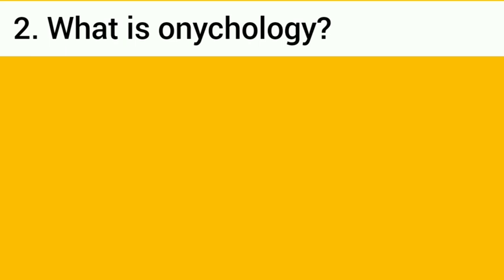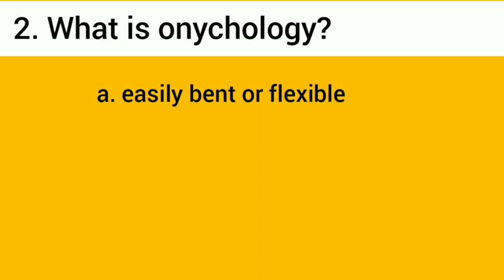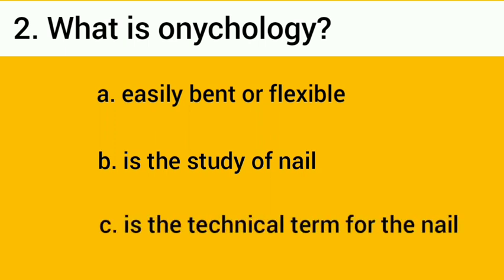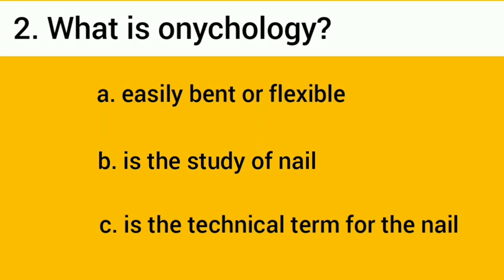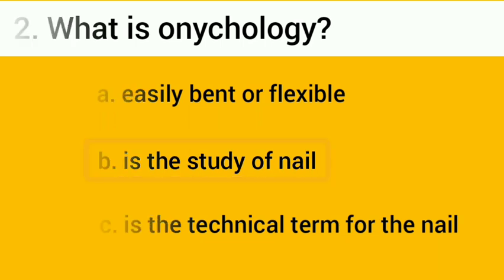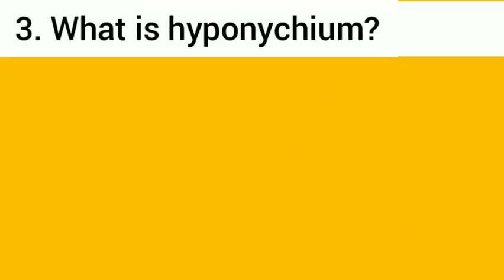Number two: what is onychology? A, easily bent or flexible; B, the study of nail; C, the technical term for the nail. The correct answer is letter B: the study of nail.